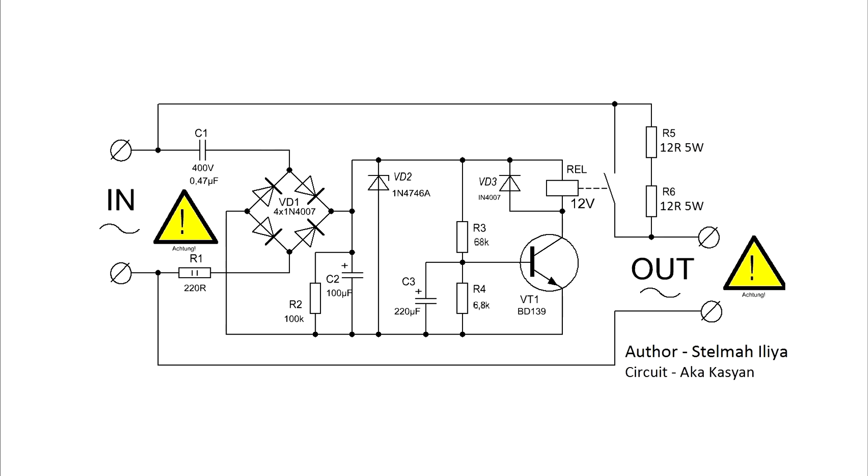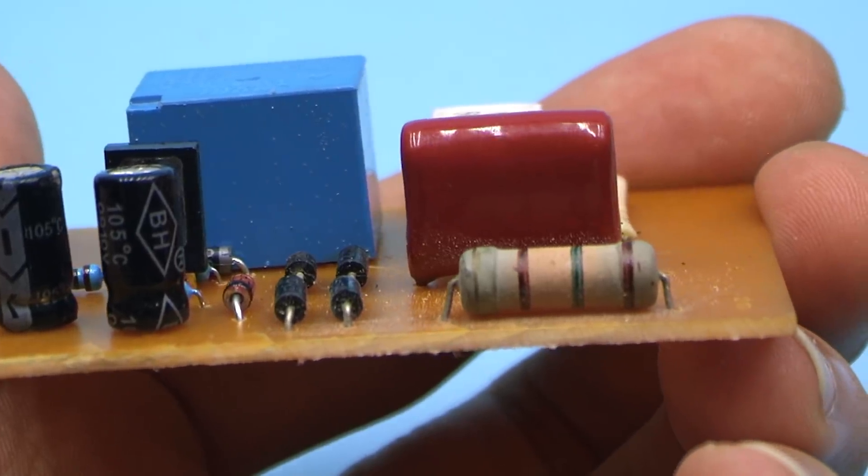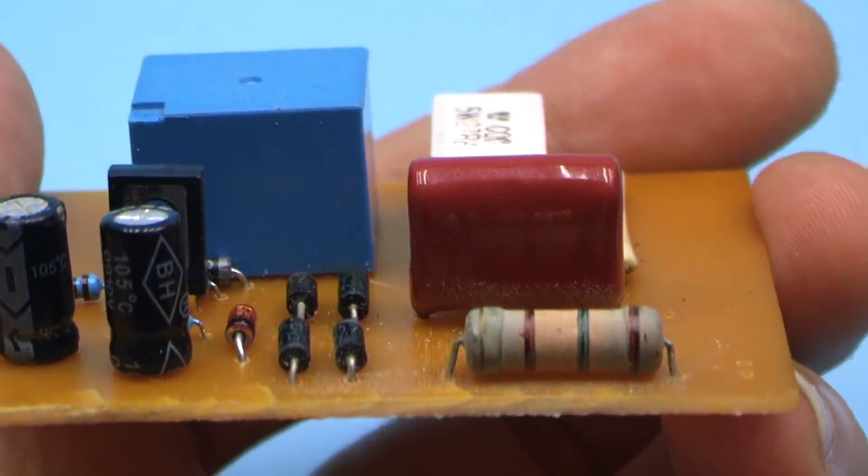At the same time, the mains voltage through the limiting resistor and the ballast capacitor is applied to the start-delay circuit. This part is a simple transformerless power supply. The output current of the circuit depends on the capacity of the capacitor.